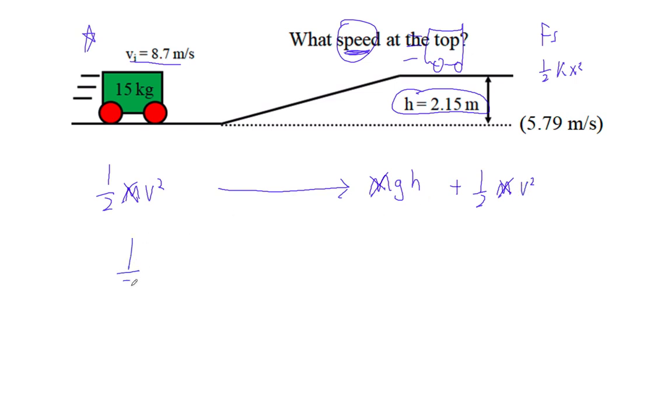So I'm going to go one-half, 8.7 squared turns into 9.81 times 2.15 plus one-half v squared.